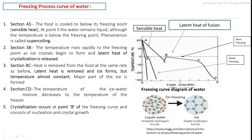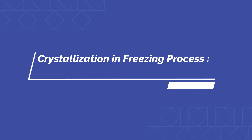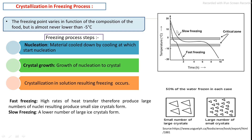In the quick freezing process, nucleation starts directly and crystal growth occurs immediately. Various freezing equipment are available — some are quick freezing equipment and some are slow freezing equipment. Using slow freezing equipment results in a low number of nucleation sites, causing very large crystals to develop. Using fast freezing equipment results in more nucleation formation and many small crystals.